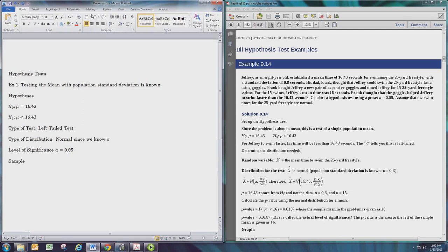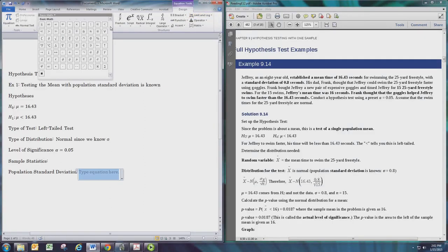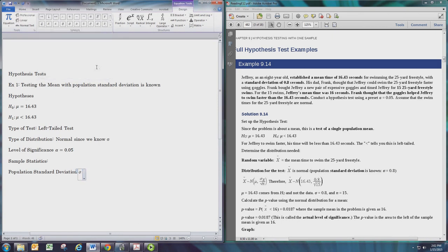Now this is the case where we have sample statistics, so let's go ahead and keep a record of those. There is a population standard deviation that's given: 0.8.